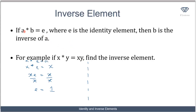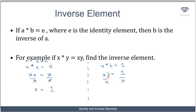Now to find the inverse, I use a★b equals e, where b is the inverse. So x★b equals 1. Writing this out using the operation, x★b equals xb equals 1. Dividing both sides by x, I have the inverse b equal to 1 over x. So the inverse element is 1 over x.